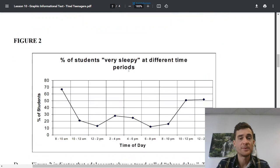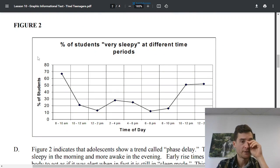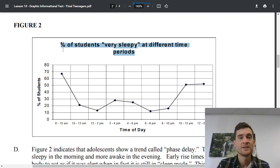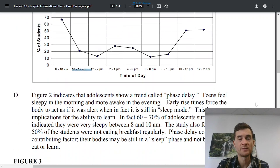Read through it. There's some more figures, more paragraphs, percentage of students very sleepy at different time periods. So we have the percentage of students that are very sleepy. That's going to be the percentage of students that are very sleepy. And then different time periods. Here's the time periods, the times of day, eight to 10 a.m., 10 to 12 a.m. You probably feel the same way when you're during the day. This is kind of like the rhythm of life.